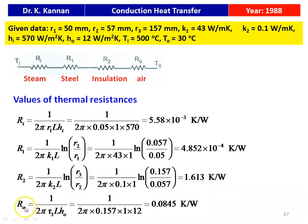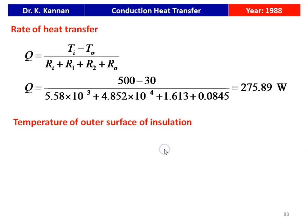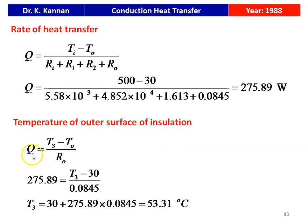The outside convection resistance Ro = 1/(2π·R3·L·Ho) = 1/(2π × 0.157 × 1 × 12) = 0.0845 K/W. The heat transfer Q = (Ti - To) / (sum of all resistances) = (500 - 30) / (total resistance) = 275.89 W. For the outer surface temperature, Q = (T3 - To)/Ro, so 275.89 = (T3 - 30)/0.0845, giving T3 = 53.31°C. The heat transfer is 275.89 W and the outer surface of insulation is 53.31°C.